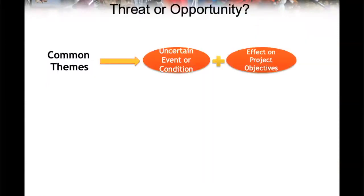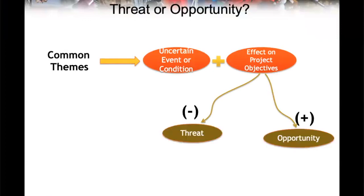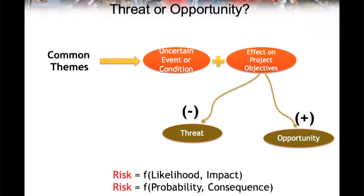Effects can be negative and positive. When it's positive, we call it an opportunity. The other one is a threat — that's when it's negative. Risk is a function of likelihood and impact. Likelihood, impact, probability, consequences — some textbooks and domains will talk about these as results.